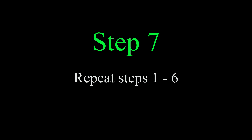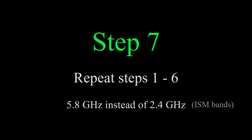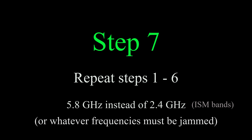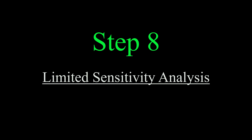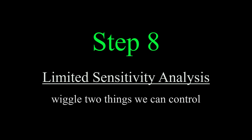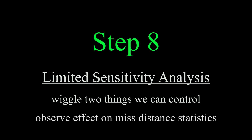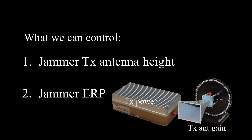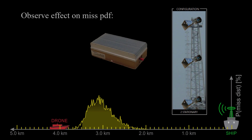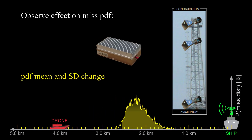Step seven: repeat steps one to six for 5.8 GHz instead of 2.4 GHz — or for each frequency, or combination of frequencies, that the system is likely to use. Step eight is a limited sensitivity analysis. We're going to vary the things we can control and see what happens to the probability of drone miss and confidence interval. The two controllable parameters are the transmit antenna height and the jammer effective radiated power, also called ERP, which is a combination of transmitter power and transmit antenna gain. The idea is to see if a small change in either of these parameters can improve the miss distance statistics.